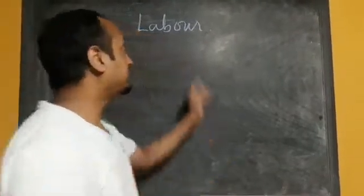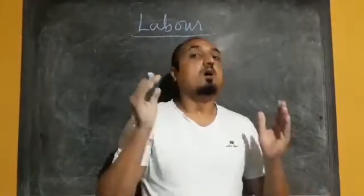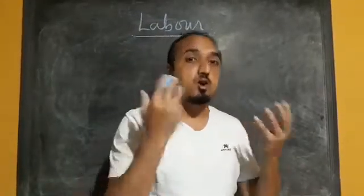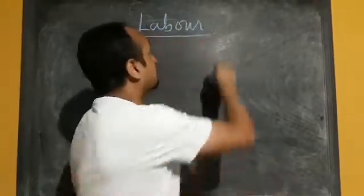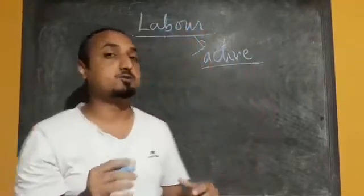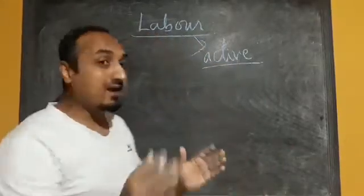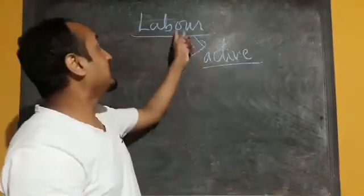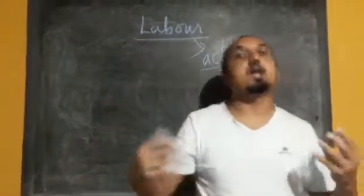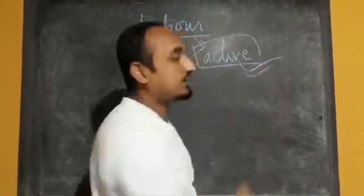Now I am going to start the next topic, that is labor. Labor is also one of the important factors of production. Land is a passive factor of production because in order to operate on that land, labor is needed. So labor is an active factor of production. Land is passive and labor is active, because in order to operate machinery, capital, or land, at least labor is needed.